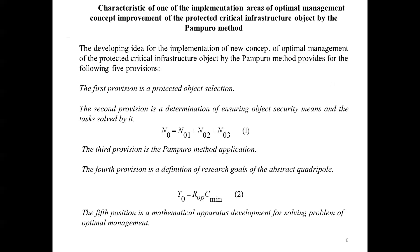The concept of optimal management of a protected critical infrastructure object using the Pampuro method provides the following five provisions. The first provision is the selection of the protected object. This object can be any object of the state's critical infrastructure, beginning from the city gas distribution station and ending by the nuclear power plant. The second provision is determination of the means of ensuring the security of the object and the tasks solved by it. The security of a protected strategic object is assessed by the risk of any catastrophic event.